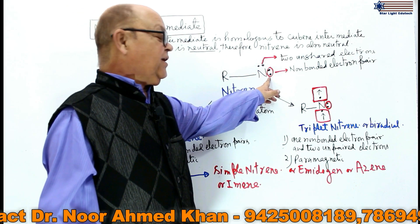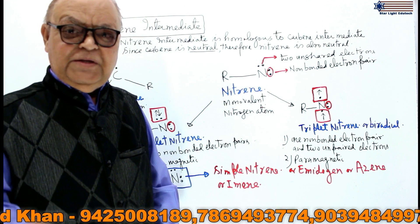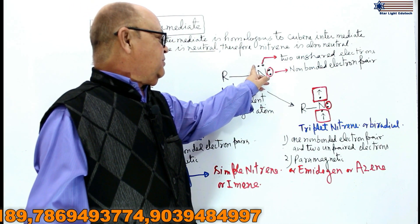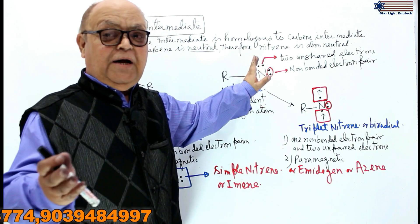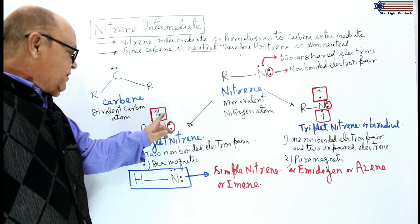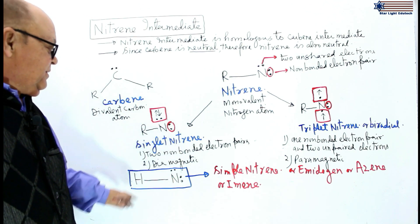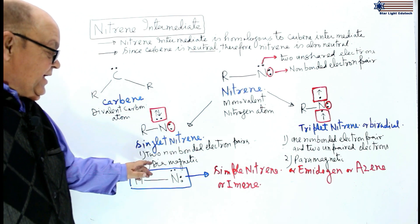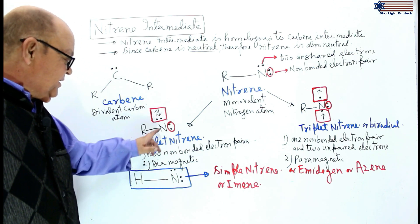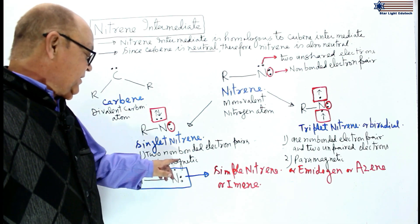Out of the four unshared electrons of nitrogen, two electrons pair with each other with opposite spin forming a non-bonded electron pair. Out of the remaining two electrons, if they are also paired, forming another non-bonded electron pair, then this nitrene is called singlet nitrene. Since there is no unpaired electron in singlet nitrene, therefore singlet nitrene is diamagnetic.